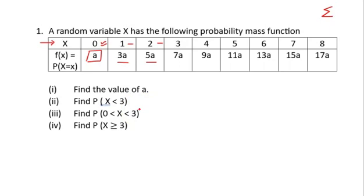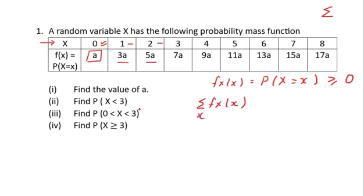For a function to be a probability mass function, the probabilities must be greater than or equal to 0 — that is the first condition. The second condition is that the summation of f_X(x) over all values of x equals 1. Since x takes values from 0 to 8, we write: summation from x = 0 to 8 of f_X(x) = 1.